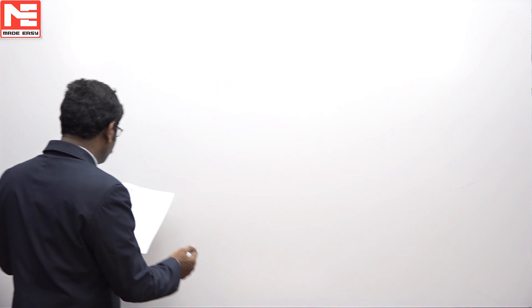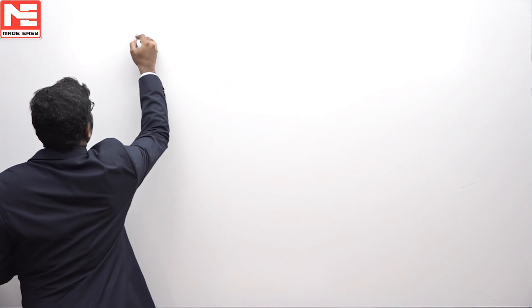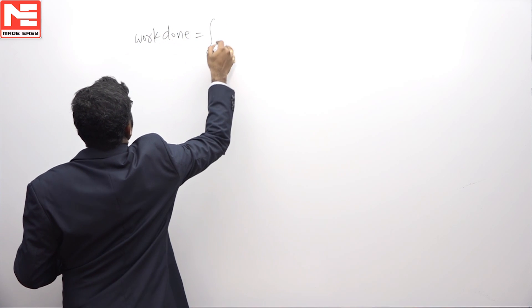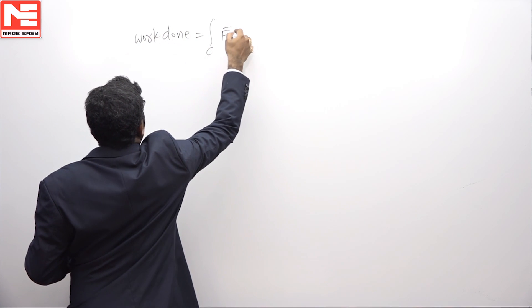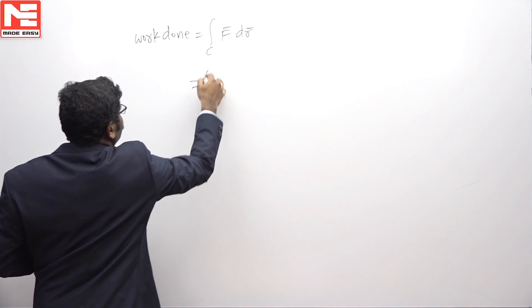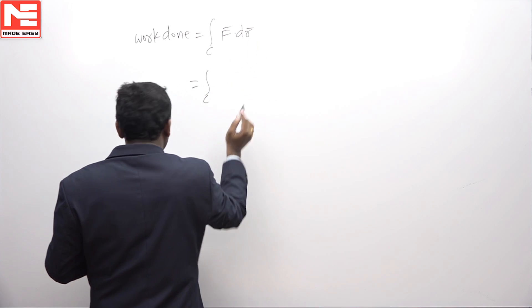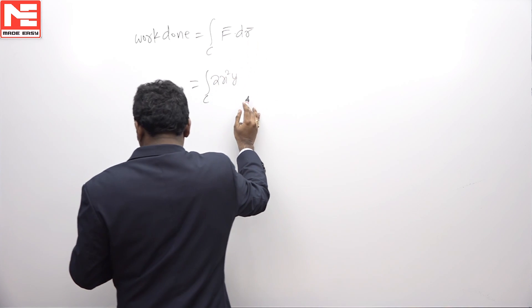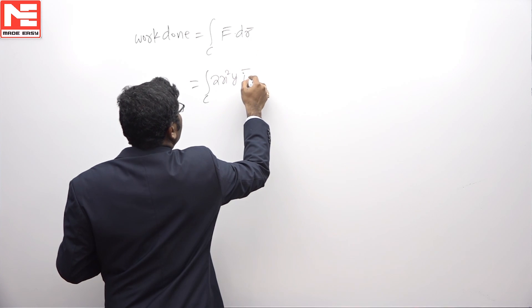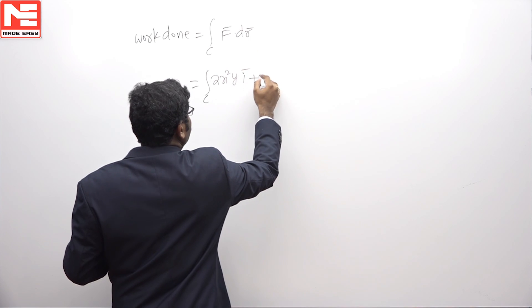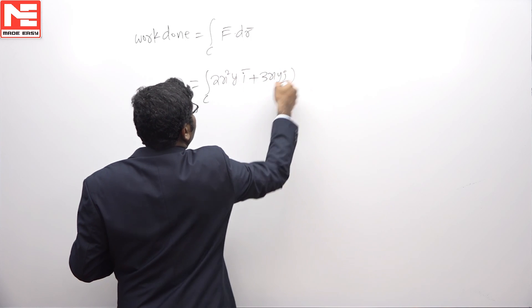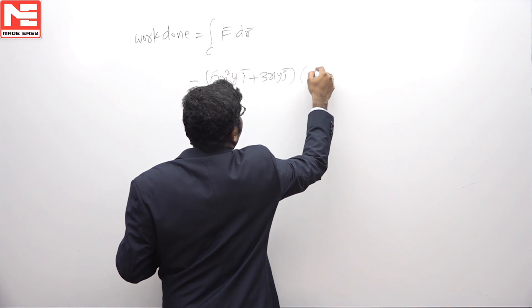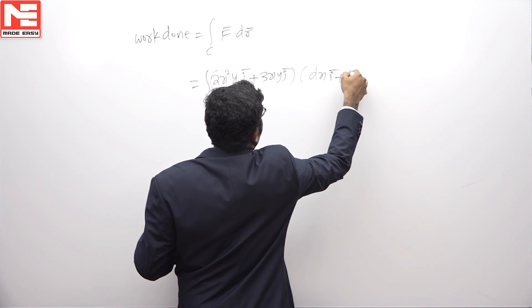The problem is to calculate work done by a force. Work done equals integral over C of F·dr, where F = 2x²y î + 3xy ĵ, and dr = dx î + dy ĵ.